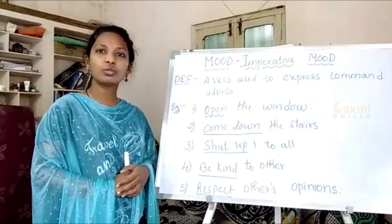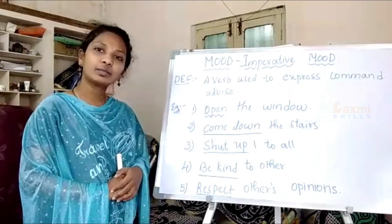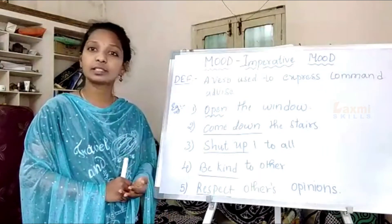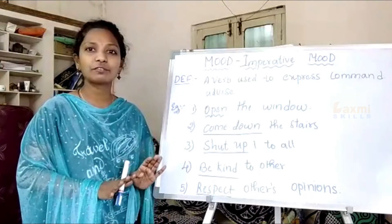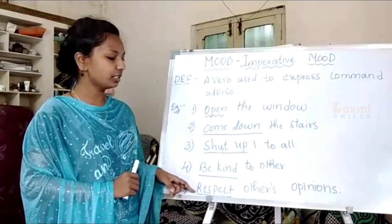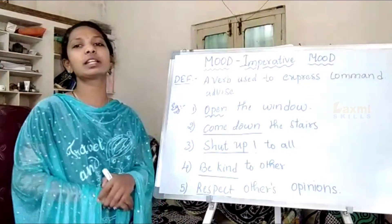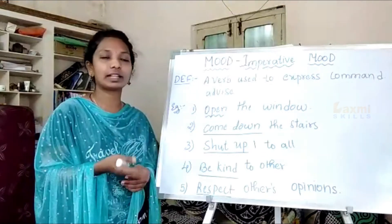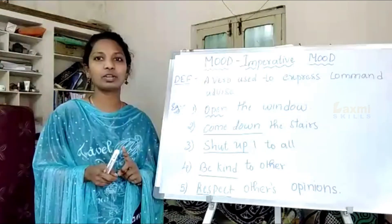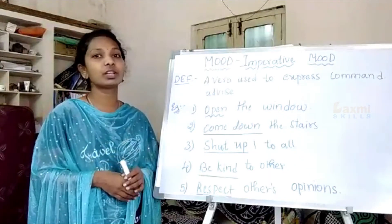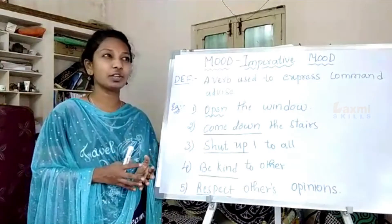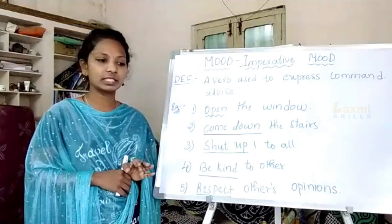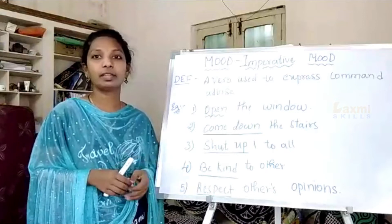'Be kind to others' is an example of advice. You can be kind or you cannot — that is up to your mannerism — but we did our duty by telling you. Similarly, 'Respect others' opinions' is advice, because when we respect the opposite person, they will respect us. Everyone runs on the same policy: give respect and take respect.